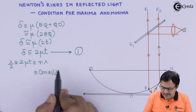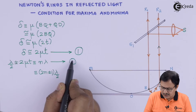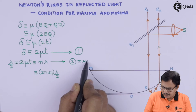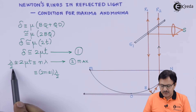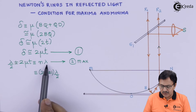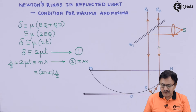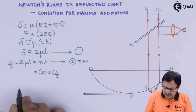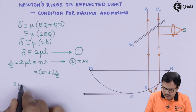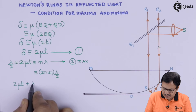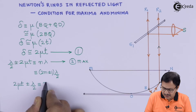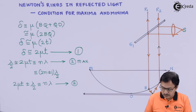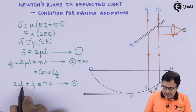Taking this into account, the equation for maxima becomes: 2μt ± λ/2 = nλ. We can write this more formally as 2μt ± λ/2 = nλ — let us mark this as equation 2. From this we can obtain the condition for the thickness.